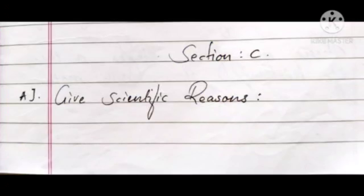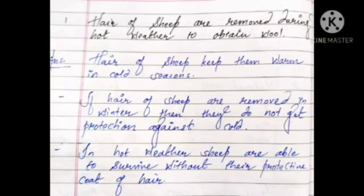Now moving towards Chapter number 3: Give scientific reasons. The question is — hair of sheep are removed during hot weather to obtain wool. The answer is: hair of sheep keeps them warm in cold seasons. If hair of sheep are removed in winter, they would not get protection against the cold. In hot weather, sheep are able to survive without the protective coat of hair, so hair of sheep are removed during hot weather to obtain wool.